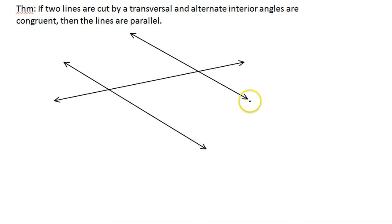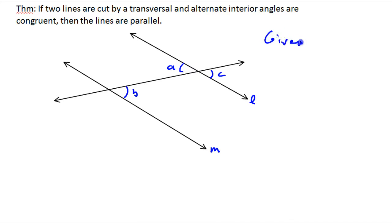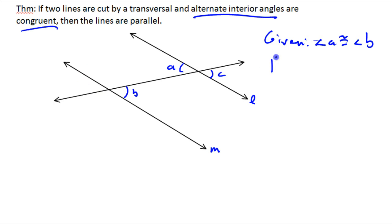I'm going to call this line L, I'm going to call this line M, and we'll call this angle A, angle B, and let's call this angle C. So what are we given? We're given that angle A is congruent to angle B, because they are alternate interior angles and they're congruent. But what are we trying to prove? We're trying to prove that line L is parallel to line M.